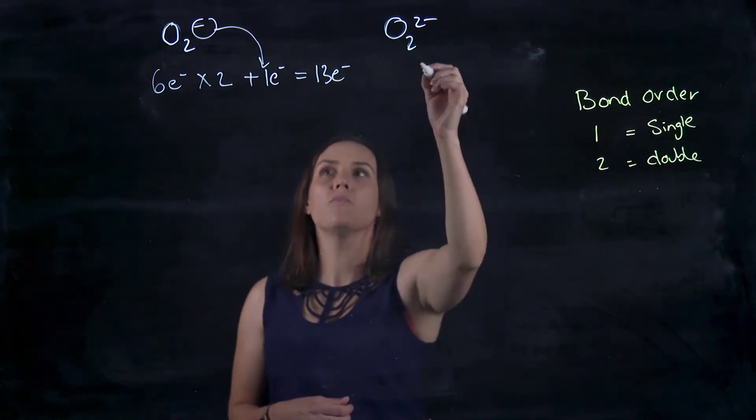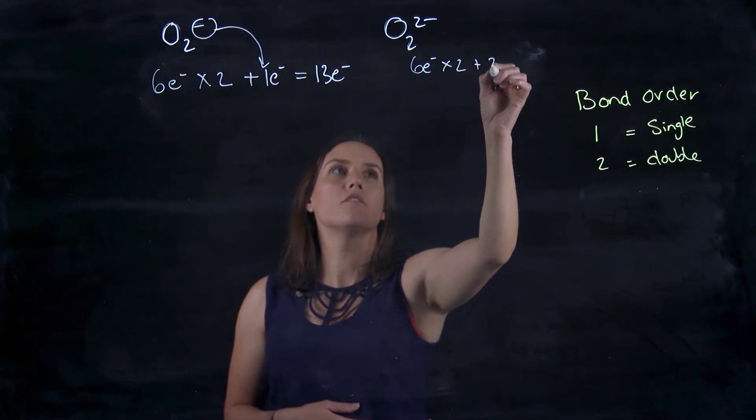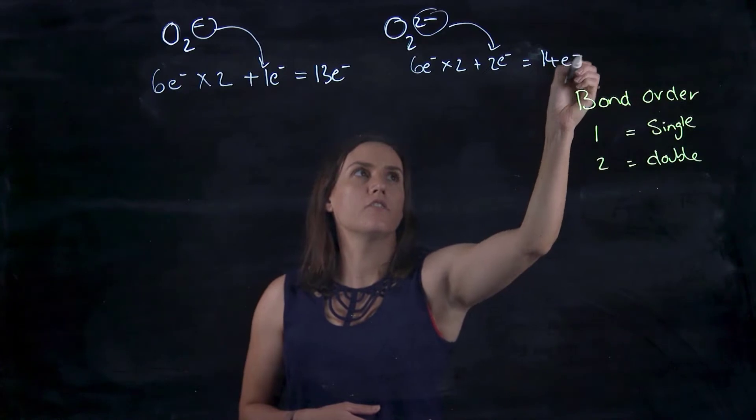Now, if we do the one with the two minus, we've got six times two plus two electrons. Now, so that gives me 14 electrons.